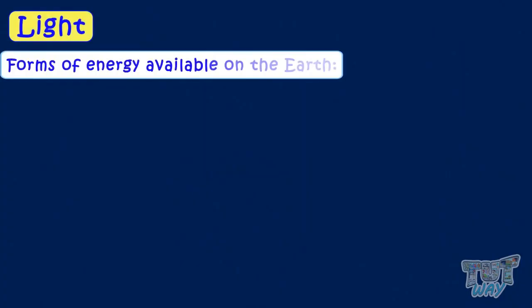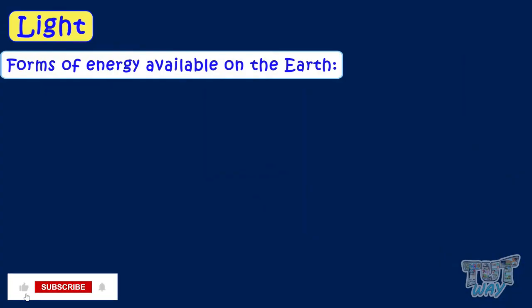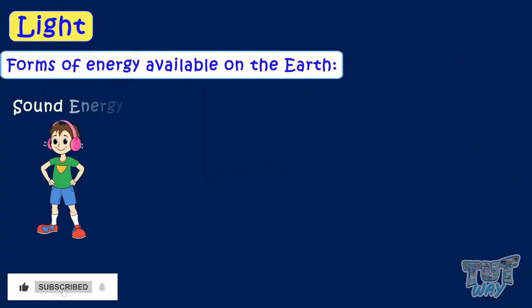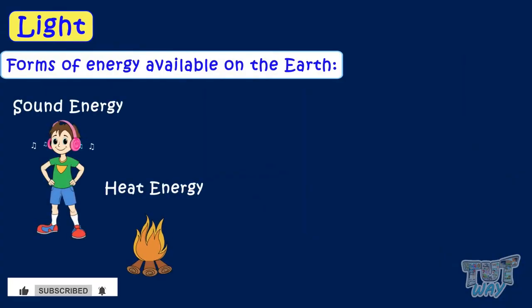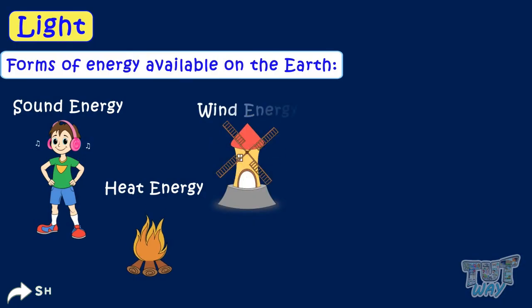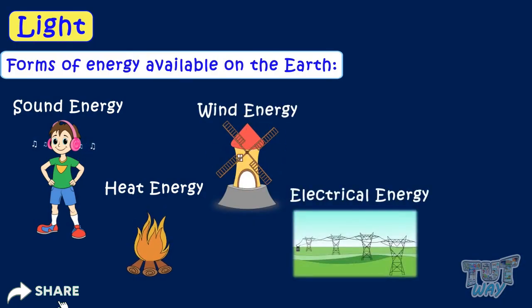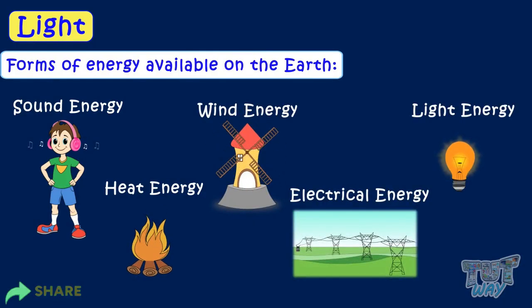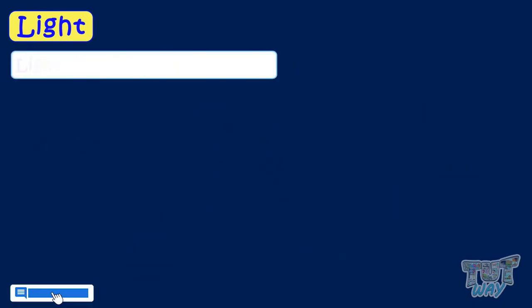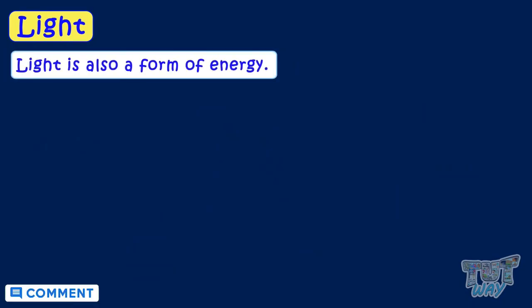We have different forms of energy available on Earth: light, sound energy, heat energy, wind energy, and electrical energy. So light is also a form of energy.